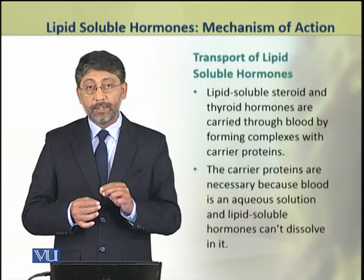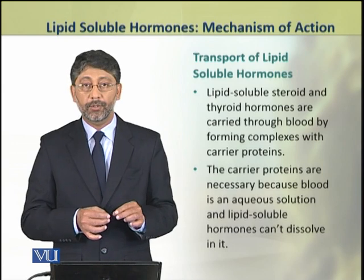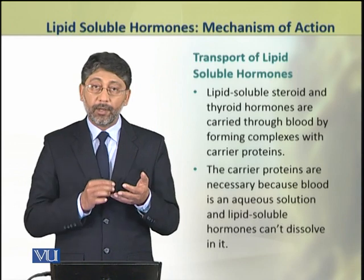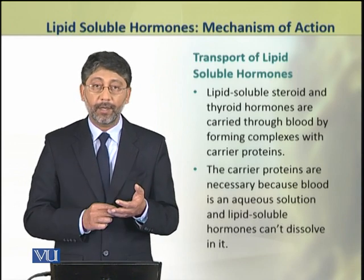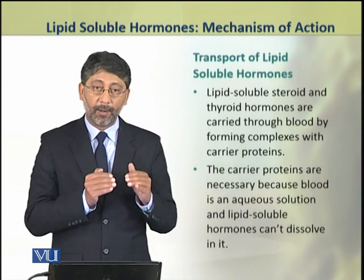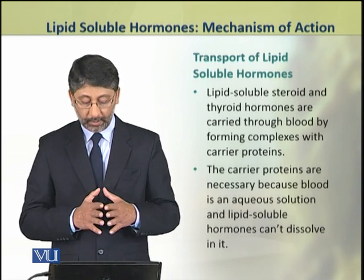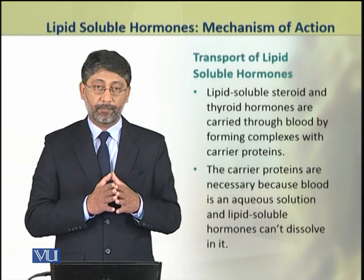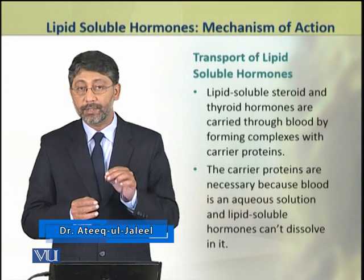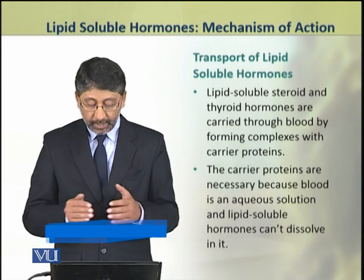First we shall see how the lipid soluble hormones are transported through the blood to their target tissues. The lipid soluble steroid and thyroid hormones are carried through blood by forming complexes with some carrier proteins. These carrier proteins are necessary because blood is an aqueous medium in which lipid soluble substances cannot dissolve.